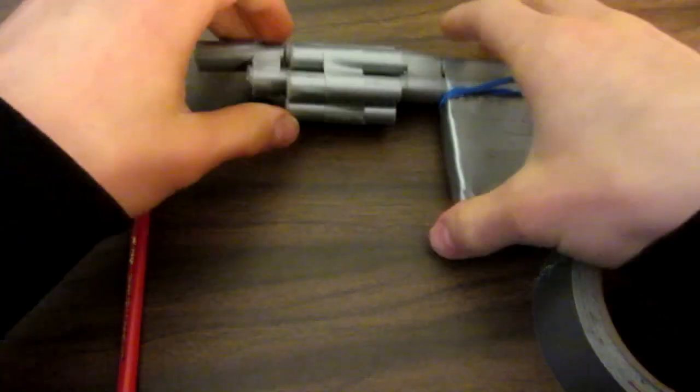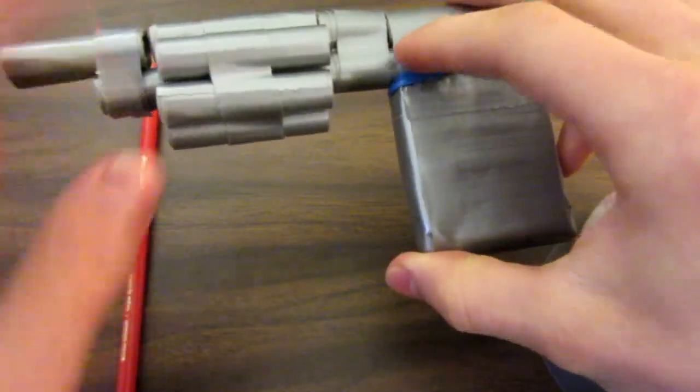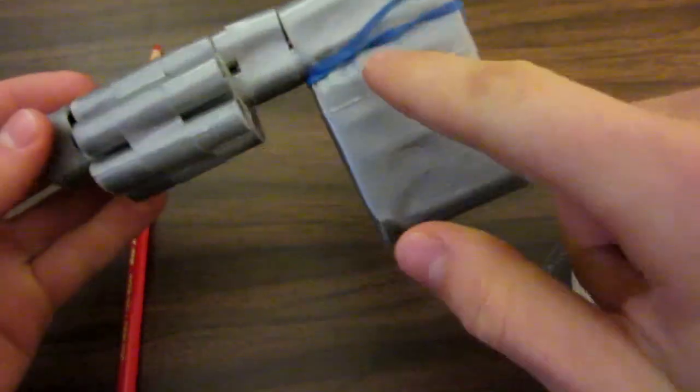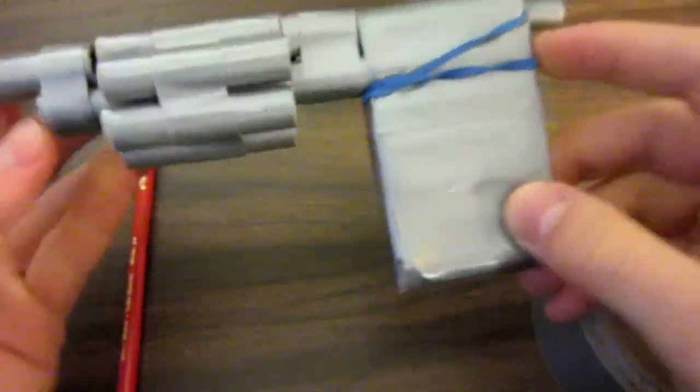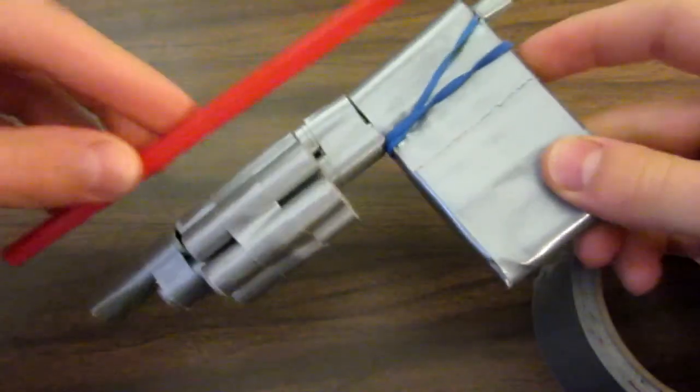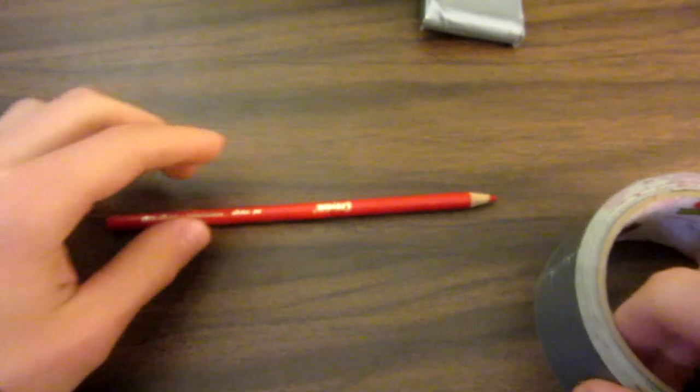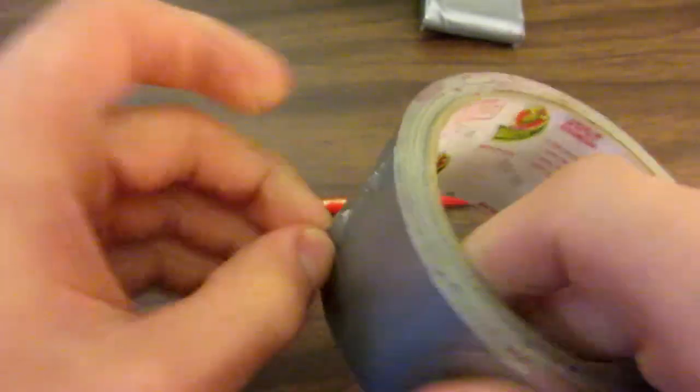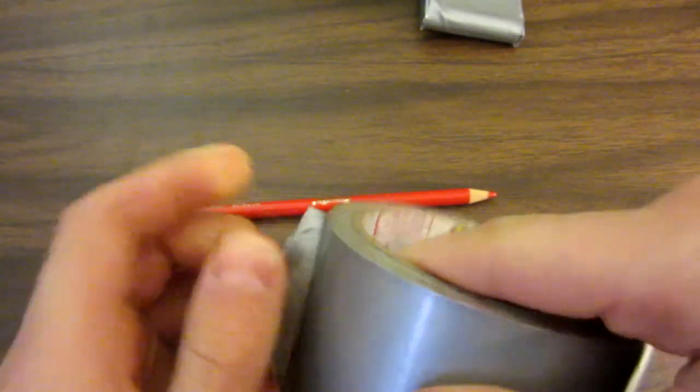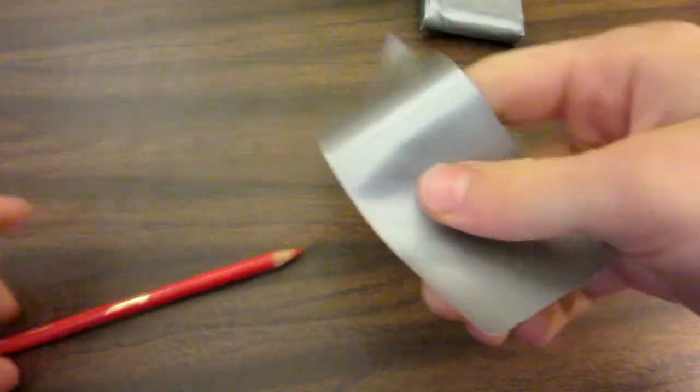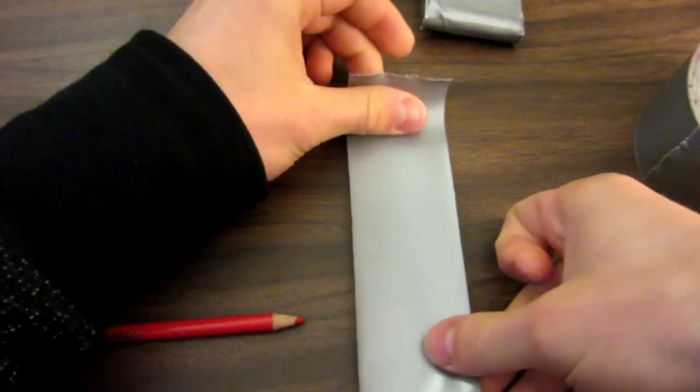For the first step, we're going to be making this barrel, or I guess the main structure of the gun that goes all the way from here right back to here. It's one solid piece, about the same length as your pencil crayon. To do this, we're going to rip three strips of duct tape the same length as your pencil crayon, about five inches or so, and lay them face down on the table beside each other.